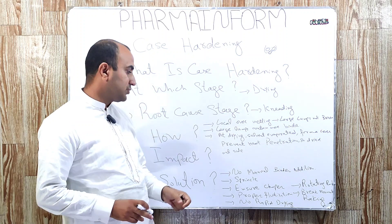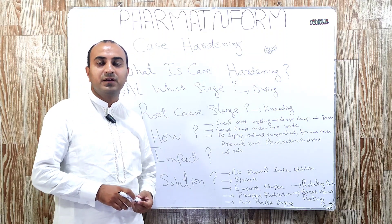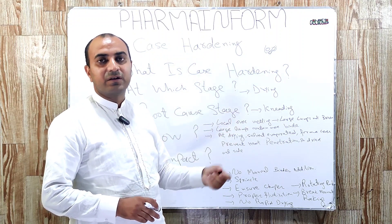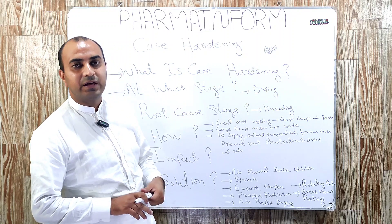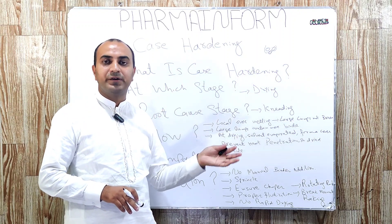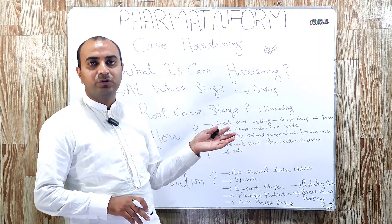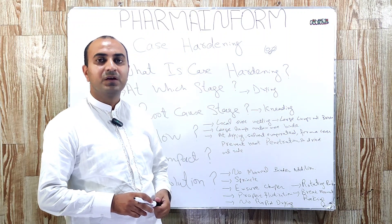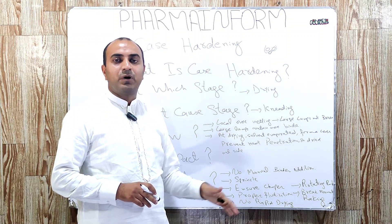What is the solution to case hardening, or how can we prevent it? As we discussed, it occurs due to localized over-wetting. Never add or try to add binder manually. Always try to use a sprinkling or showering system to add the binder over the powders.